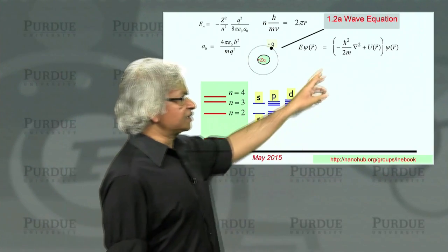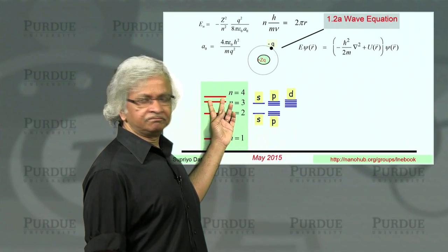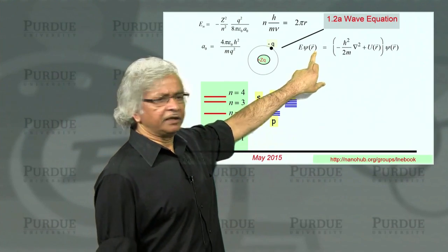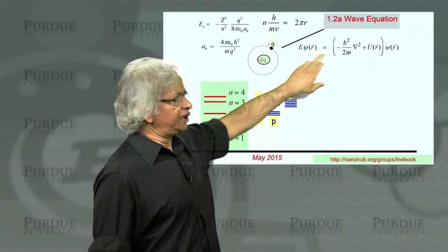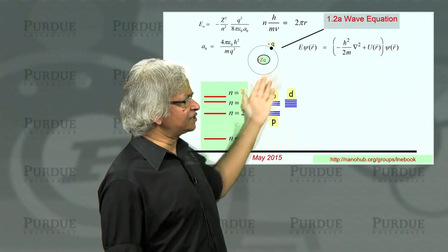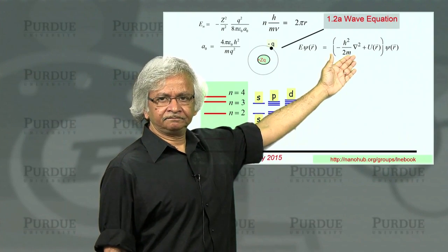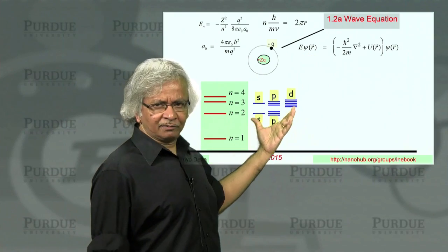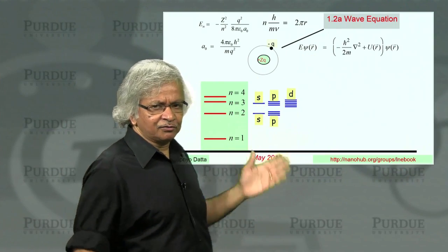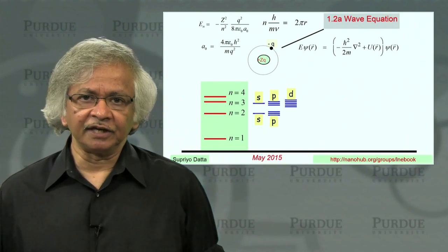If someone says, here's the wave function for this level and it has an energy of so-and-so, you can always put it in and take derivatives. It will take you a while, but after you have done all that, you can see what energy you get and whether it satisfies that equation. You could check out some of these wave functions, which are all available. You can easily look them up, the wave functions in a hydrogen atom.